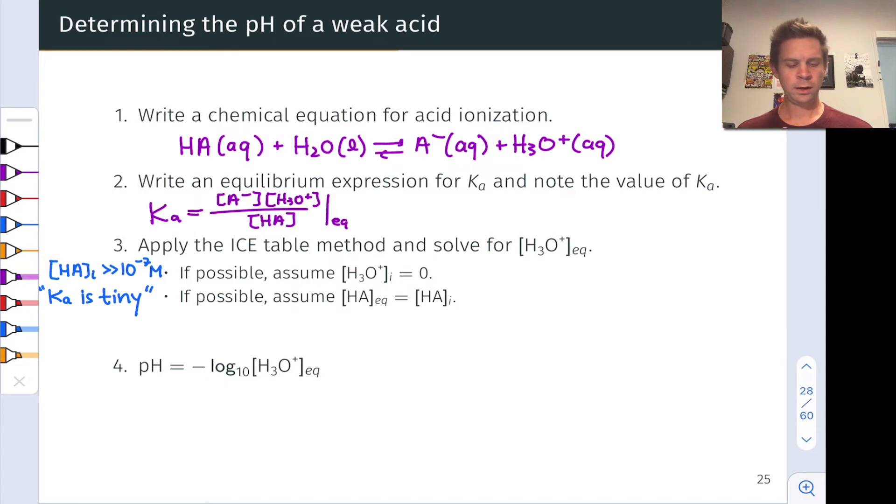we can arrive at a Ka equation, an equilibrium equation that is greatly simplified mathematically. In the numerator, we have equilibrium concentration of H₃O⁺, let's call that X, the equilibrium concentration of A⁻, that is going to be equal to X as well,